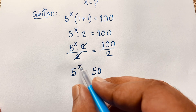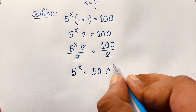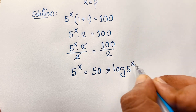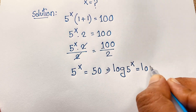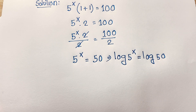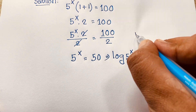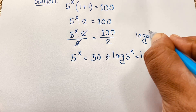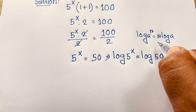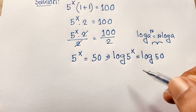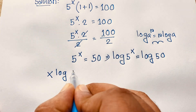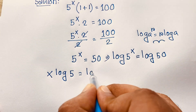Now if I want to find the value of x, I apply the natural log to both sides: log of 5 to the power x is equal to log 50. Using the logarithm formula — log a to the power r equals r times log a — it becomes x times log 5 is equal to log 50.